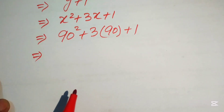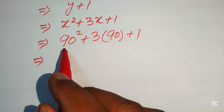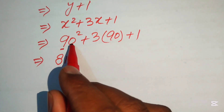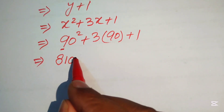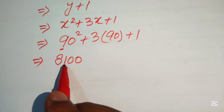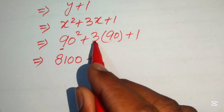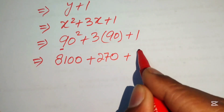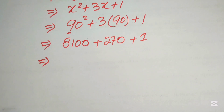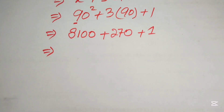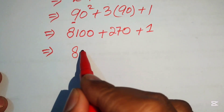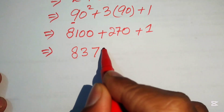To find 90², note that 9² equals 81, so 90² equals 8100. Then 3 times 90 equals 270, plus 1. Using traditional addition of 8100 + 270 + 1, we get 8371.